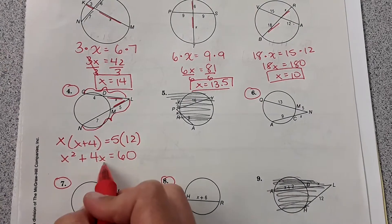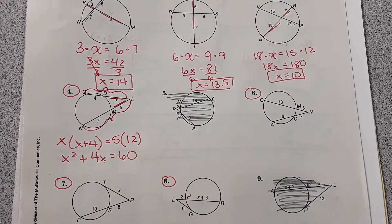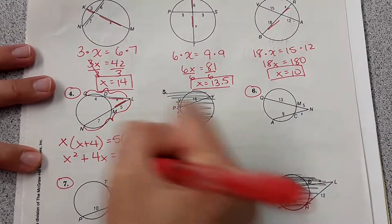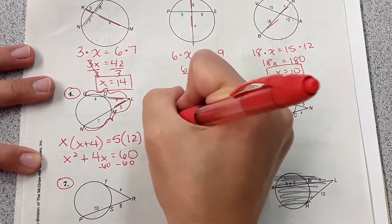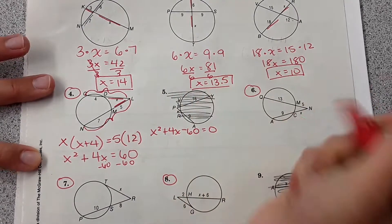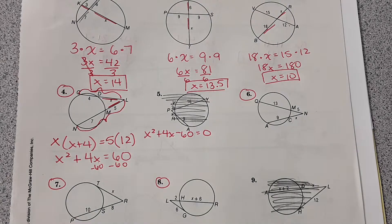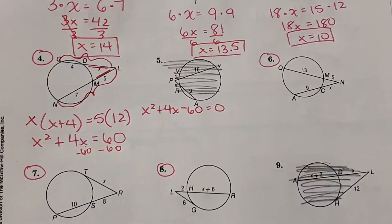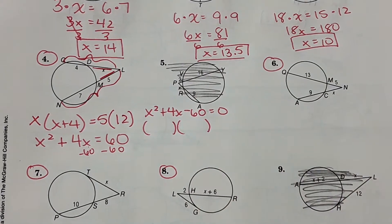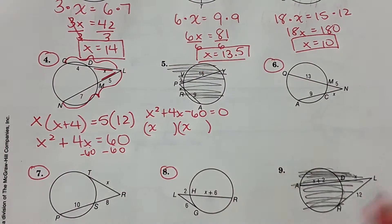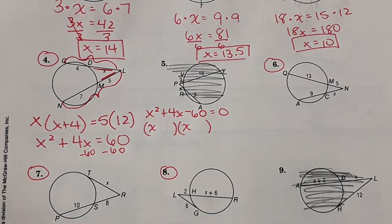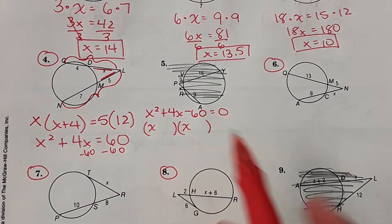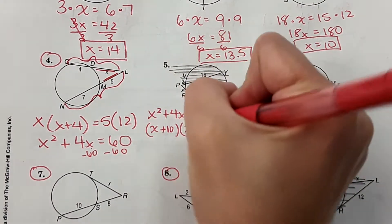x times x is x squared, and 4 times x is 4x equals 60. With this x squared and the x that's just by itself, we can't just solve for x like we normally would. We're going to have to factor it. We're going to start by subtracting 60 from both sides and getting this whole thing equal to 0. So x squared plus 4x minus 60 equals 0. It's the quadratic from algebra. So what we're going to do next is factor this. We're going to set up the two parentheses and put an x here and an x here. Then we need two numbers that multiply to negative 60 that add to 4. And those two numbers are 10 and 6. So I'm going to do x plus 10 and x minus 6.